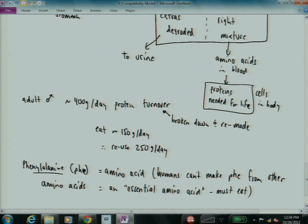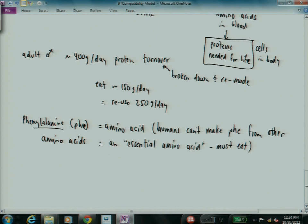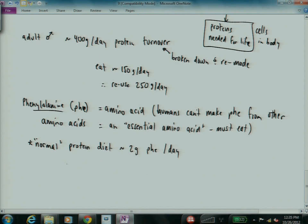It turns out, to do some numbers, which is relevant to where we're going next. So a normal, I'll put it in quotes, because it varies a lot from person to person. Protein diet is about two grams of phenylalanine per day. So in your normal diet, you eat about two grams of phenylalanine. You need about a half a gram per day to make proteins. Therefore, you must degrade about 1.5 grams per day to keep it, because you can't store it. So a normal American diet, which is actually relatively protein-rich, tends to contain about four times as much phenylalanine as you actually need. So you throw away about a gram and a half of phenylalanine a day, which is fine. Everybody in this room does fine doing that.